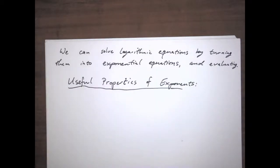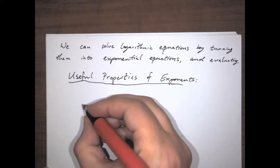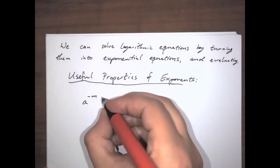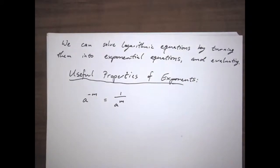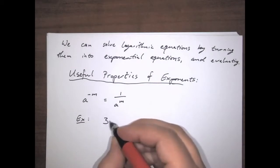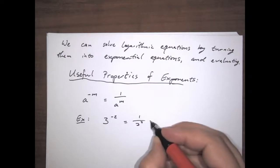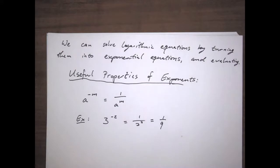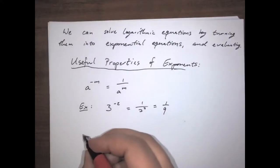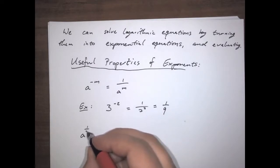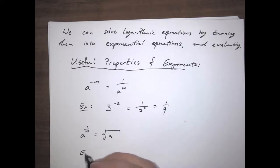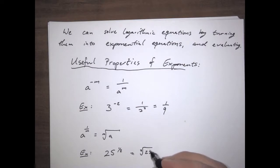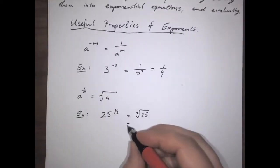This is not going to be a very long list of properties of exponents — we'll add more later when they become useful. First, remember what it means if you have a negative exponent: a to the negative m is the same as 1 over a to the m. So for example, 3 to the negative 2 is equal to 1 over 3 squared, which is equal to 1 ninth. Another property: if we have a fractional power like a to the 1 over m, this is the same as the mth root of a. For example, 25 to the 1 half is the same as the square root of 25, which equals 5.